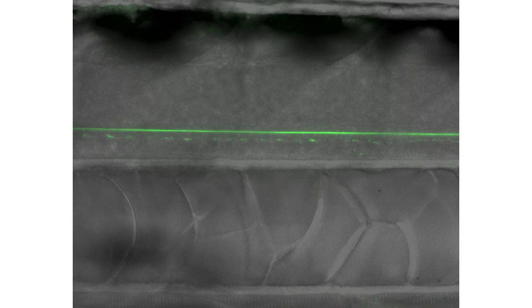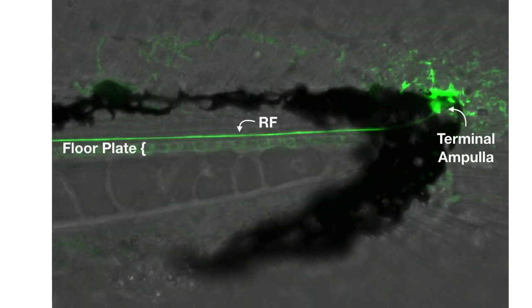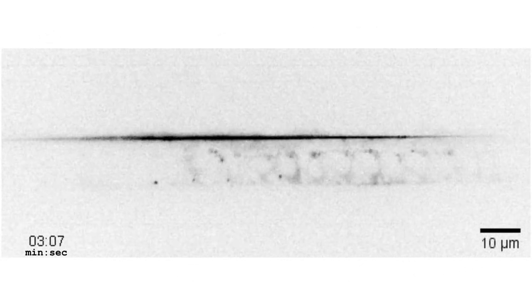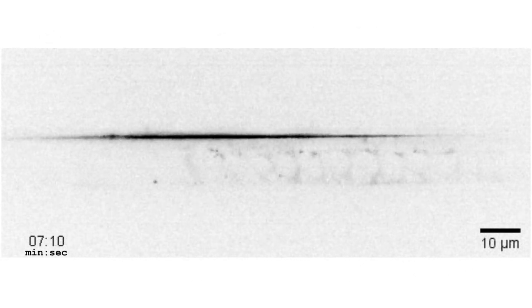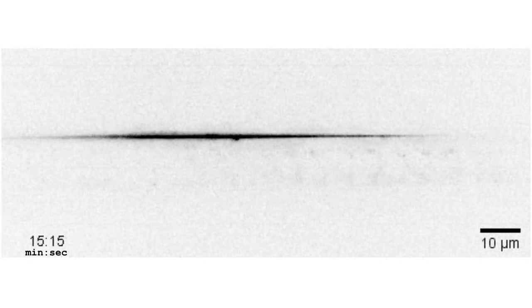The scospondin-GFP expression pattern matches what has been previously reported and what we saw with antibody staining. This allows us to visualize the dynamics of the Reissner fiber for the first time. Overnight time-lapse imaging shows the scospondin-GFP material moving into the periphery at the fin fold. Imaging at high speed and high magnification, it appears that the fiber is moving toward the tail tip and material is continually extending and retracting from the fiber.